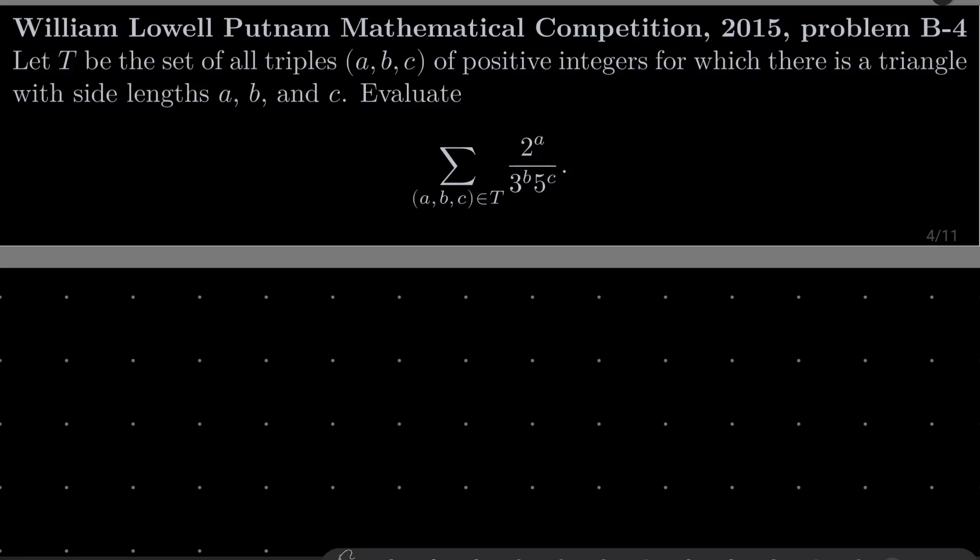Hello friends. In this video I'd like to solve the following problem from the William Lowell Putnam Mathematical Competition 2015, problem B-4. Let T be the set of all triples (a,b,c) of positive integers for which there is a triangle with side lengths a, b, and c. We wish to evaluate this product over all the triples from our set T of 2 to the power of a, 3 to the power of b, over 5 to the power of c. It's a nice problem. Here are my hints.